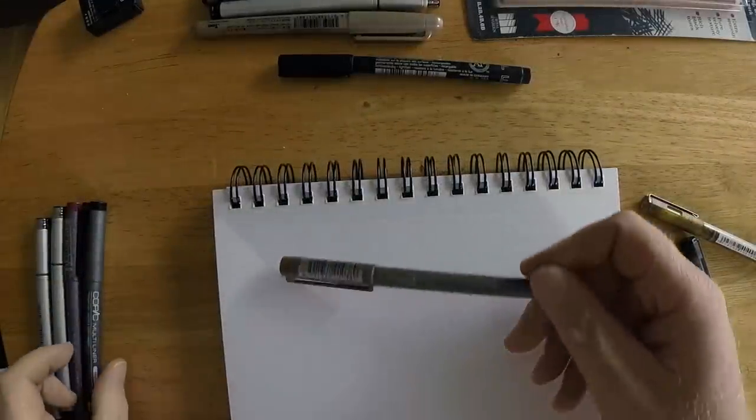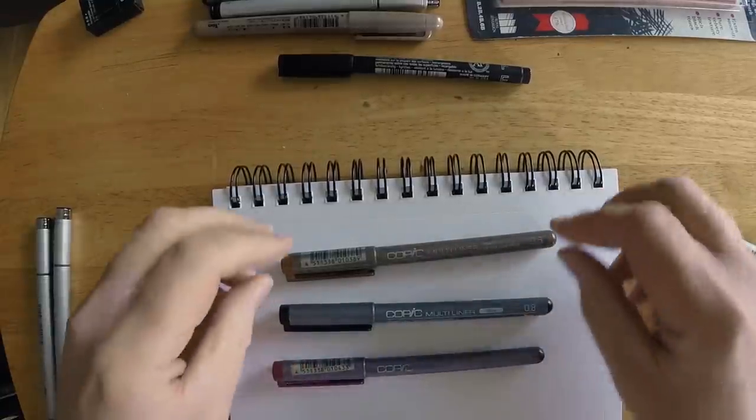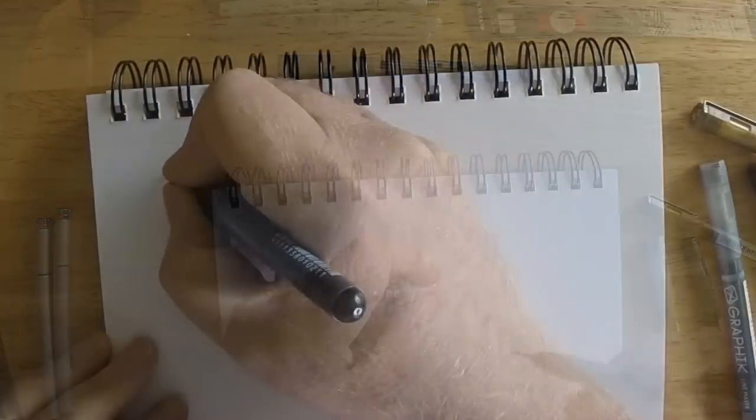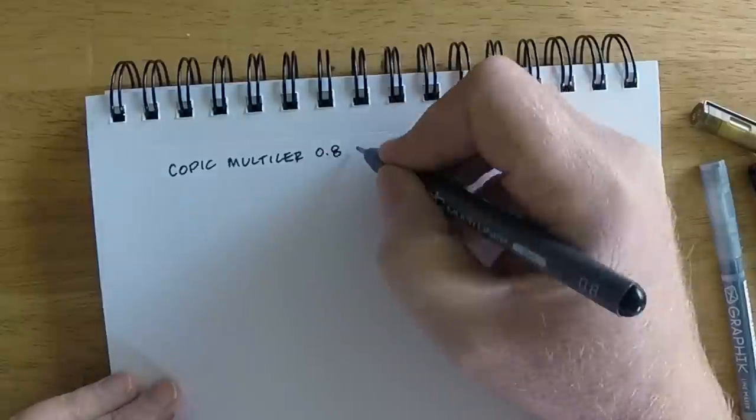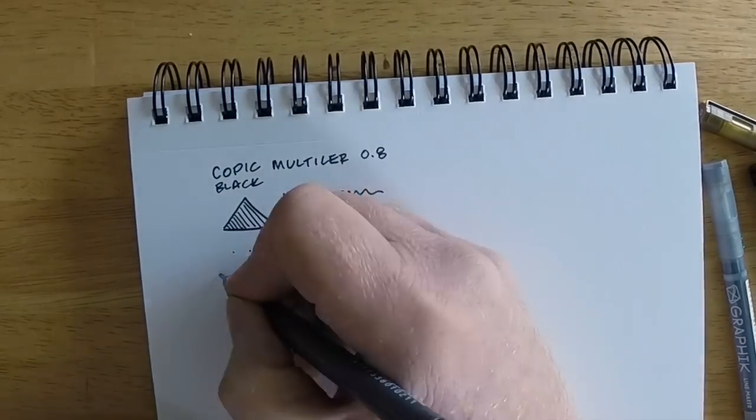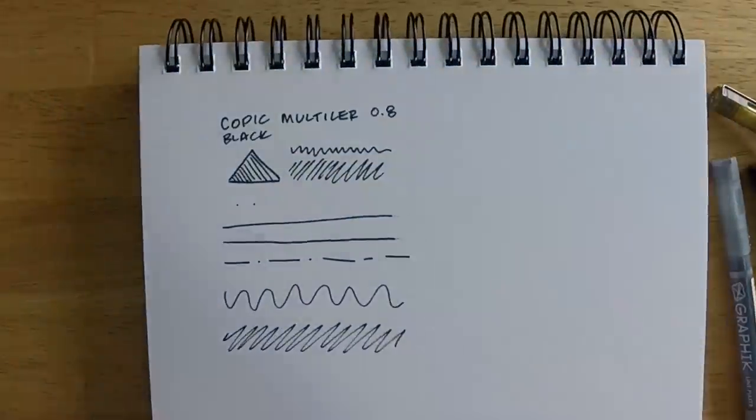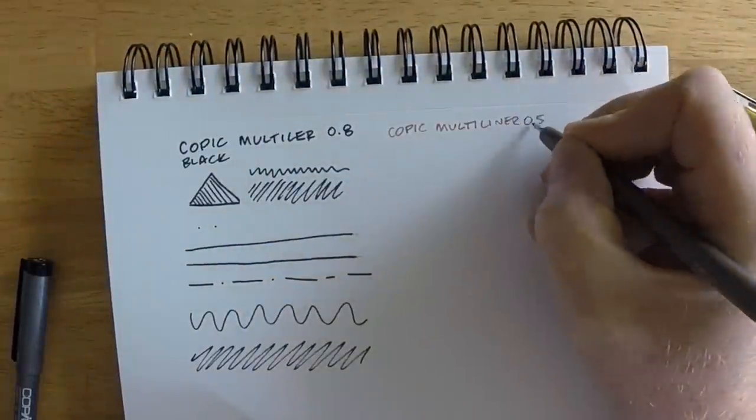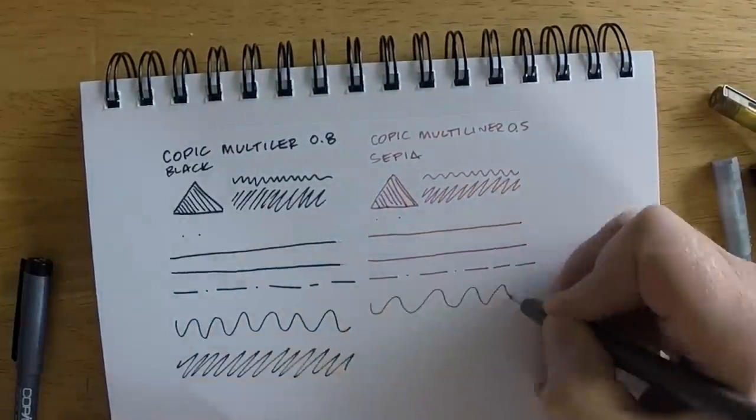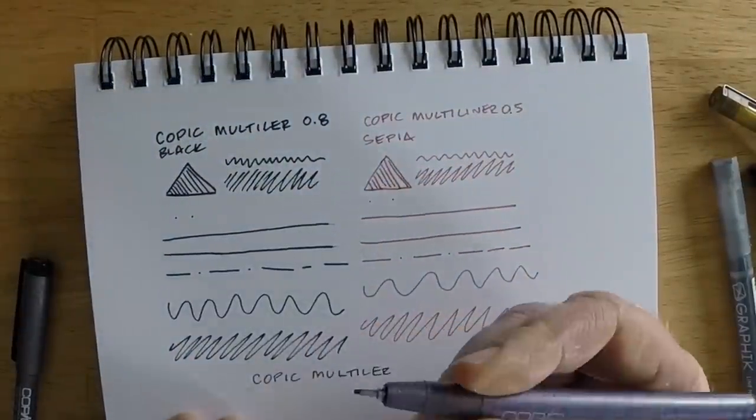And the next one we're going to try is the Copic Multiliner pen, not the SP, not the aluminum body pen, but these right here. I've got black, a sepia, and a purple that we'll try. The first thing you notice about these Multiliners after using the Derwents is there's no scratchy feeling and no skipping on the paper. This is basically standard sketchbook paper, so it's not grainy or rough.